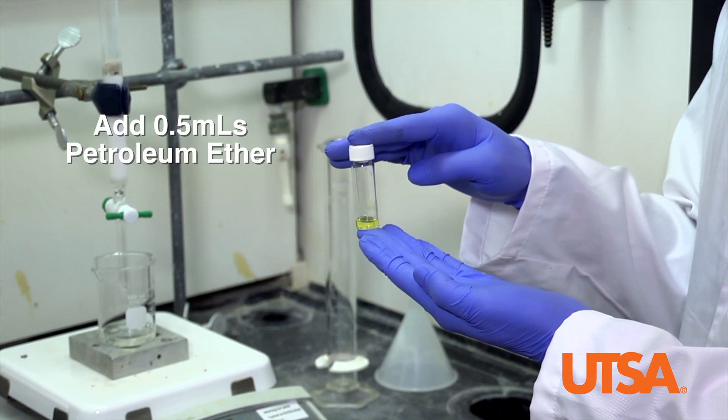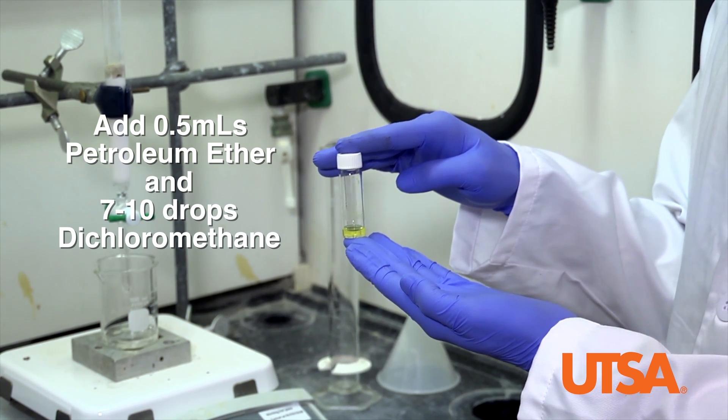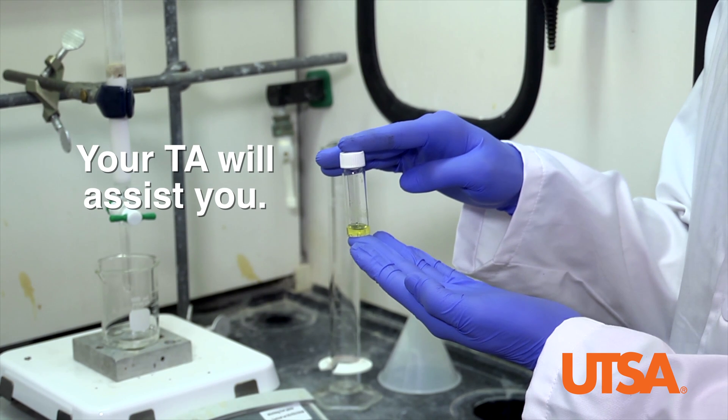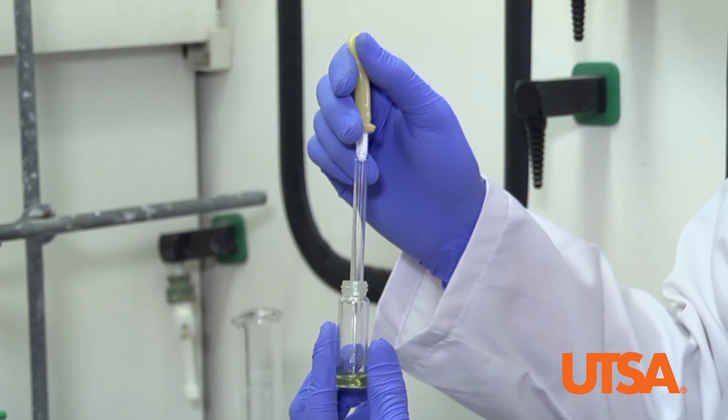Add 0.5 milliliters of petroleum ether and 7 to 10 drops of dichloromethane to dissolve your sample. Have your TA assist you with this process. Using a pasteur pipette, load your sample to the column.